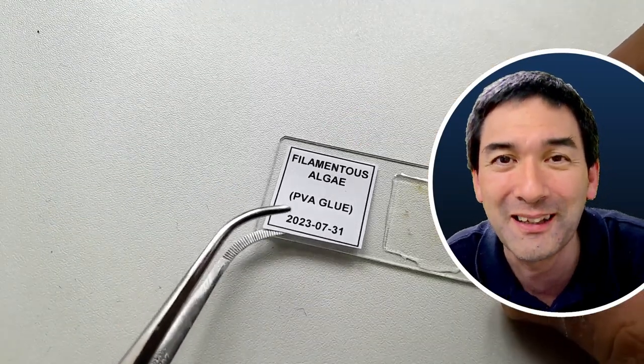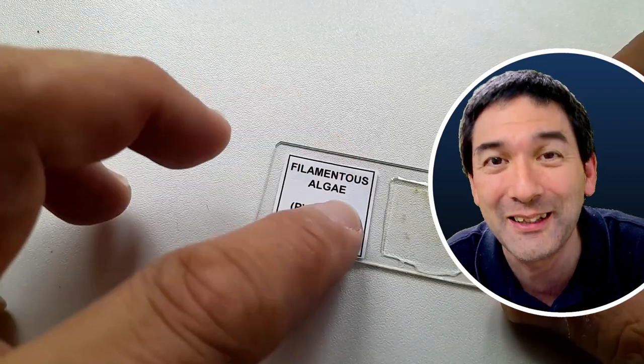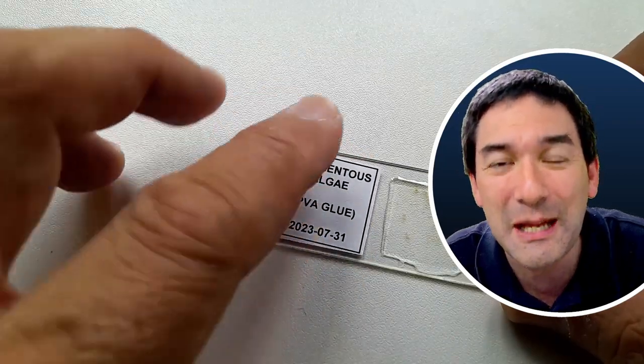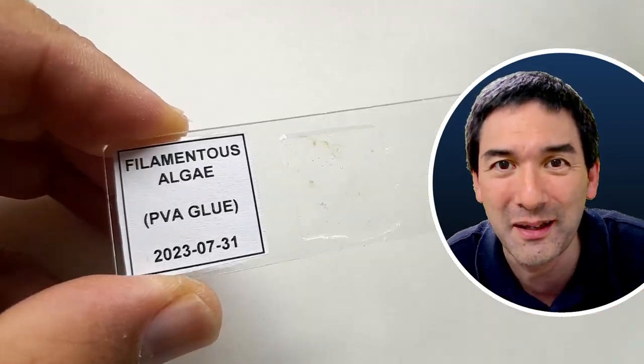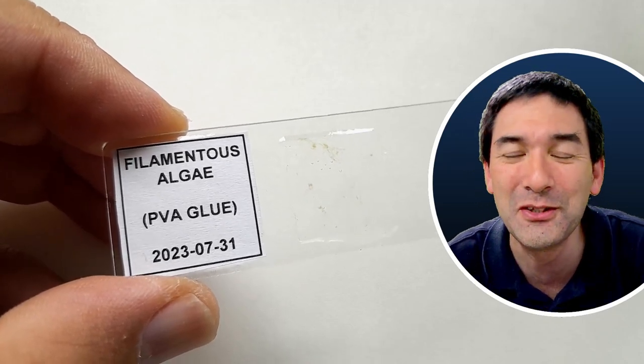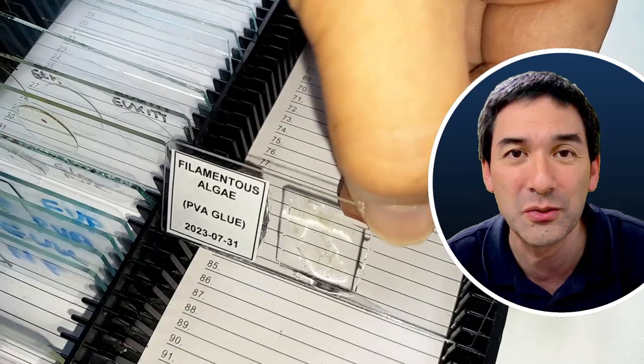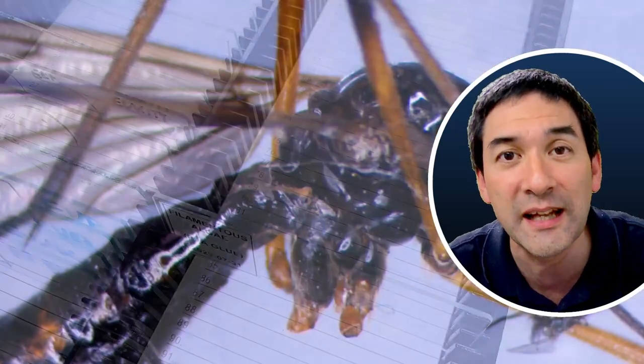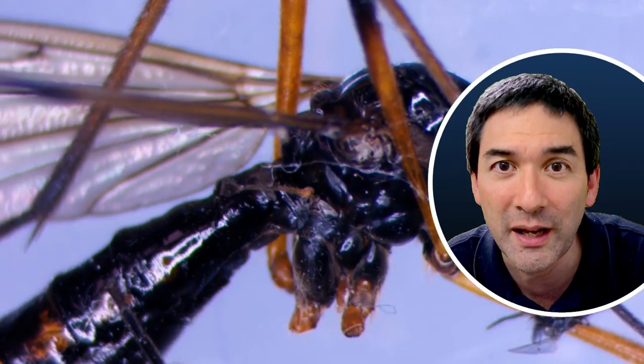The mounting medium can also be used to connect and glue a little label on the microscope slide as well. Then everything can go into the box, but I would like to advise you that you first store the slide horizontally so that it dries completely.